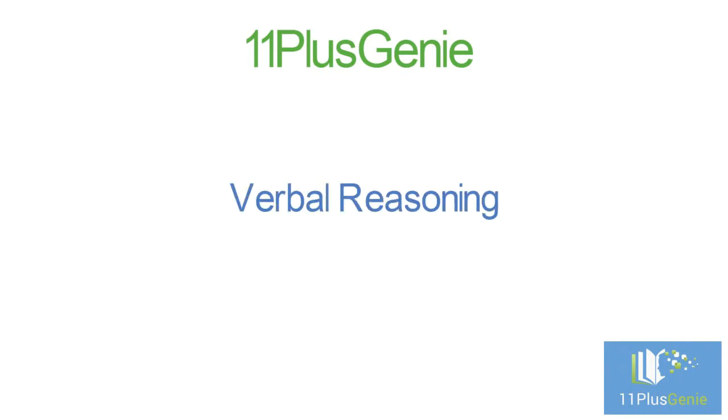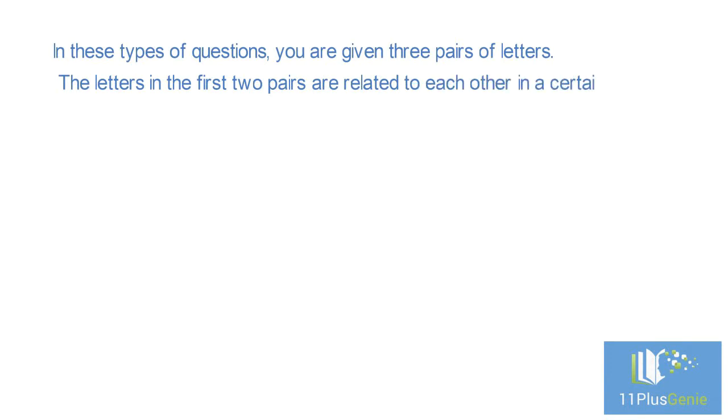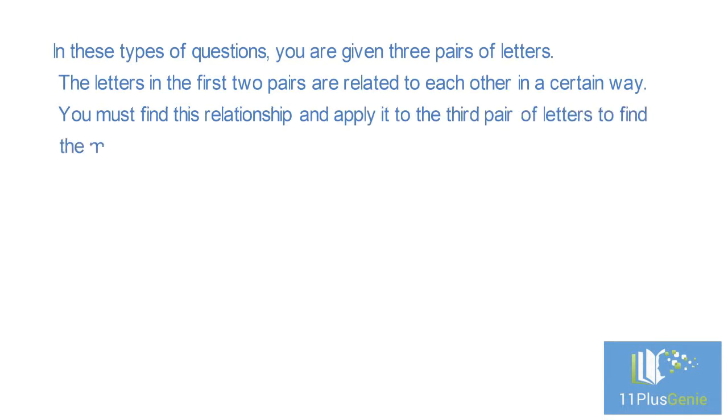Verbal Reasoning Type 4 – Letter Analogies. In these types of questions, you are given three pairs of letters. The letters in the first two pairs are related to each other in a certain way. You must find this relationship and apply it to the third pair of letters to find the missing pair.